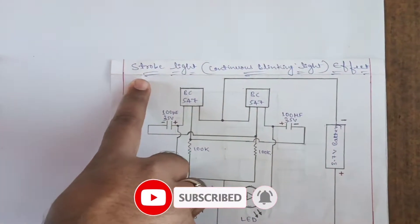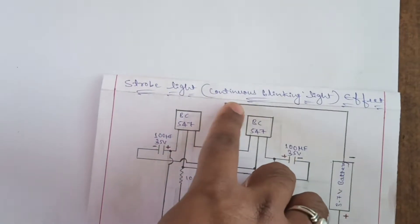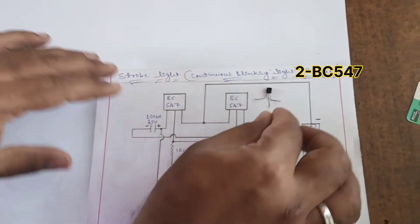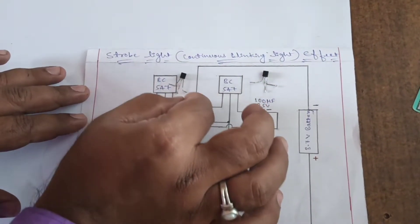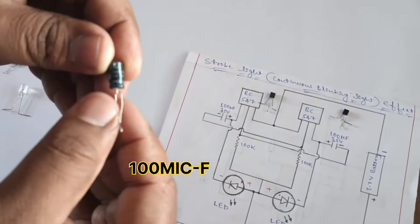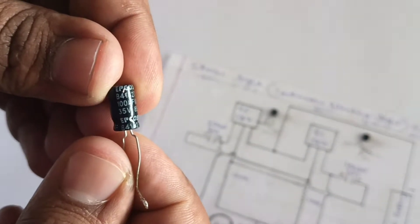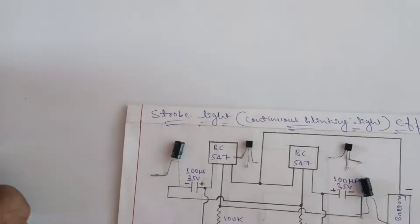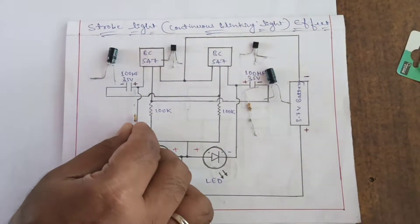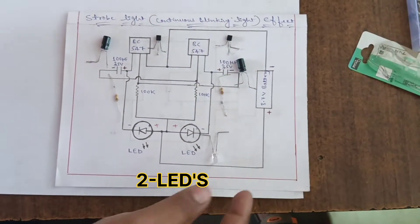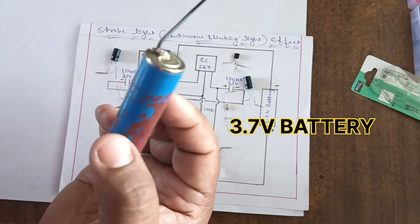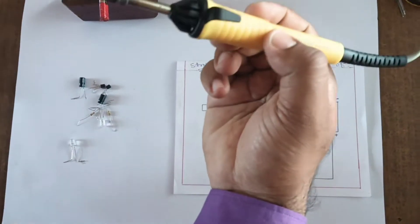Welcome to our channel. Strobe light effect continuous blinking LED project. In this we use two BC547 transistors, two capacitors 100 microfarad 35 volt, two 100 kilo ohm resistors, two LEDs, and one 3.7 volt lithium battery. Let's start the connection.